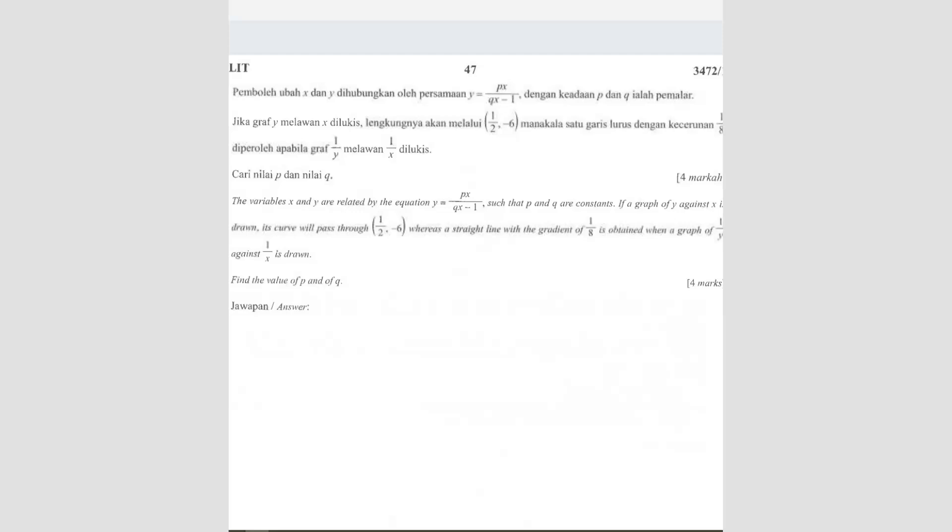Question 6. The variables x and y are related by the equation. So here's an equation here. Such that p and q are constants. If a graph of y against x is drawn, its curve will pass through this point.